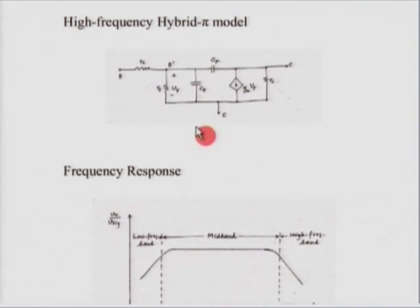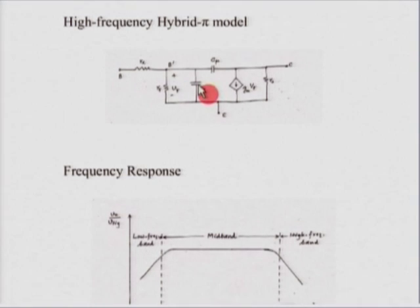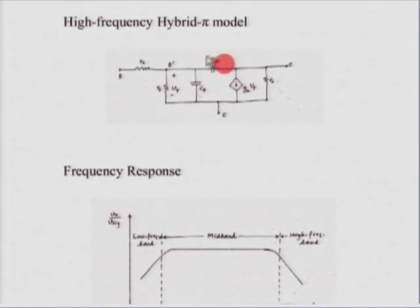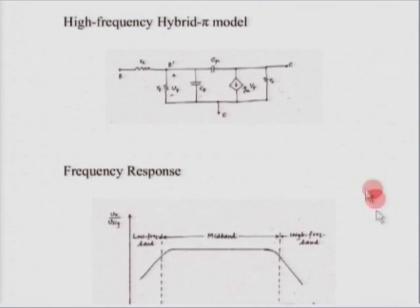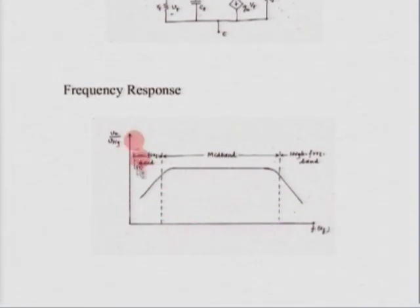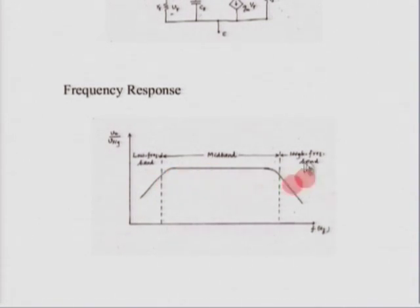The typical voltage gain of a common emitter amplifier would be about 100. The value of C_μ is typically about 1 picofarad and C_π is approximately 10–12 pF. Because of this negative voltage gain, the capacitor C_μ gets multiplied by the voltage gain, and effectively you have a huge capacitance sitting across the input side. This reduces the high frequency response — the high frequency response is primarily due to the coupling capacitors at low frequencies and these two capacitors at high frequencies.